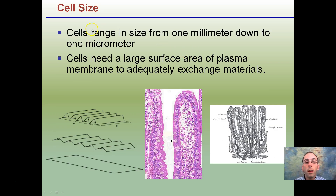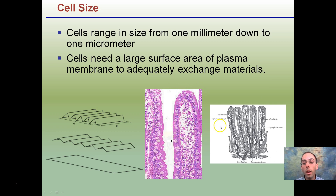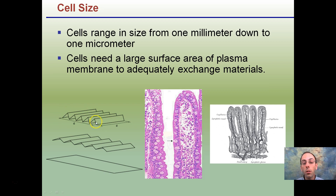Cell sizes range from one millimeter down to one micrometer — either way, they're still very small. The reason is that cells need a large surface area of plasma membrane to adequately exchange materials. In our small intestine, we have villi — these finger-like structures — which allow a lot of surface area. This is important because it aids in the ability for nutrients to diffuse across the membrane.